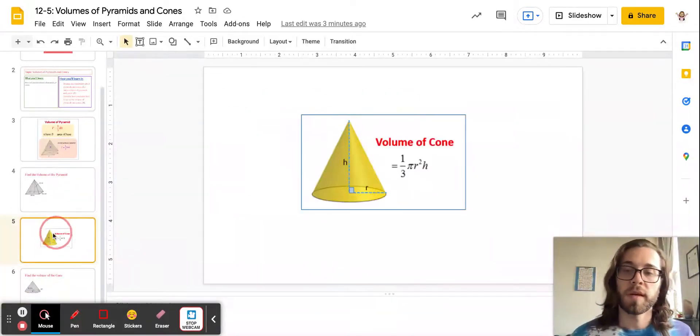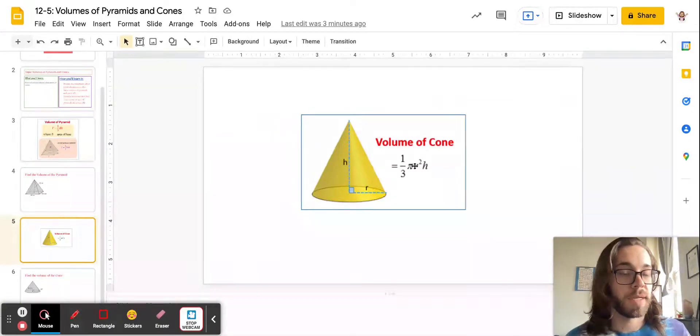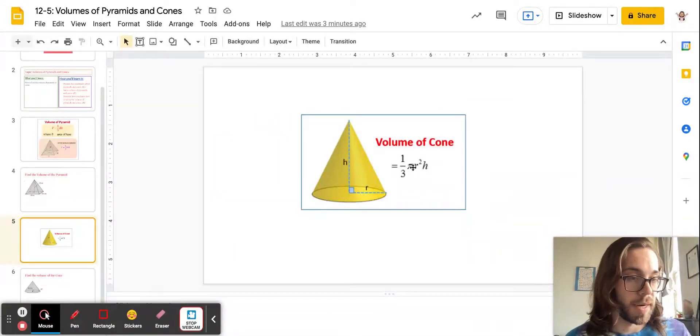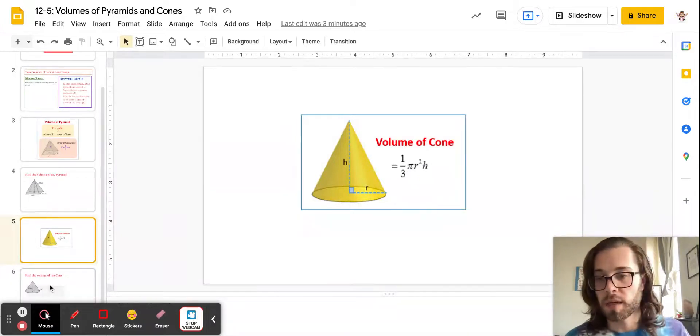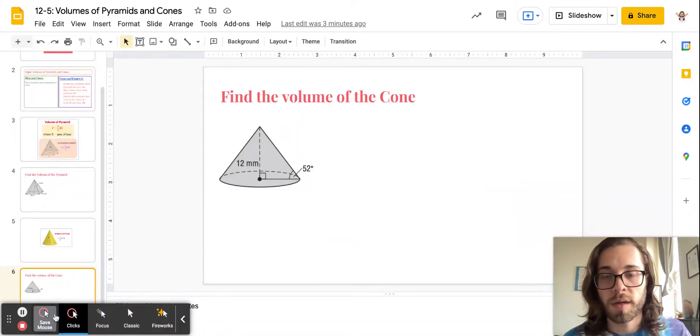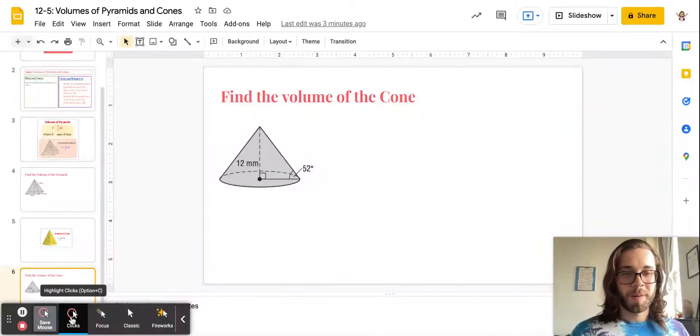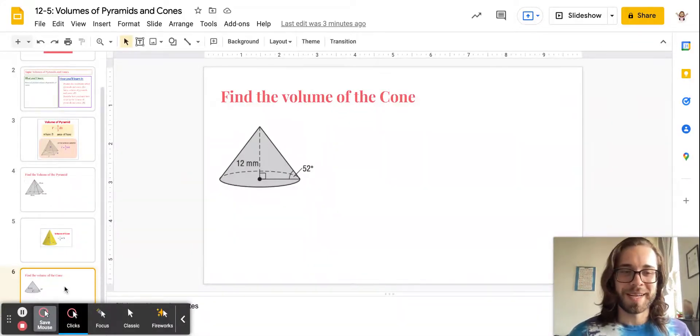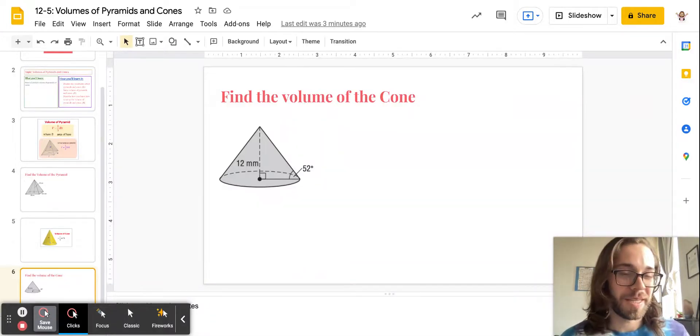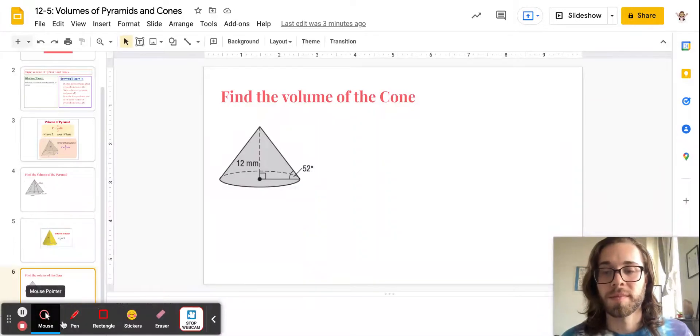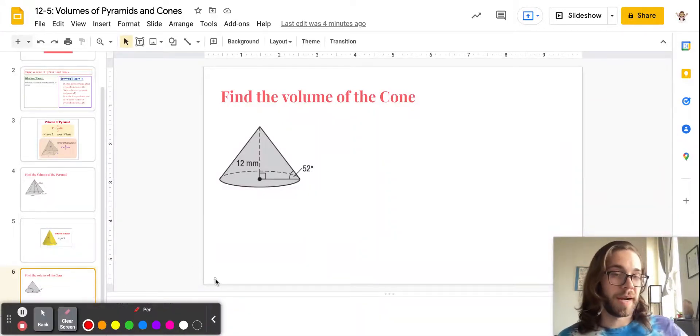Okay. So it is one-third the area of the base, which is the circle right here, pi r squared, times the height once again. So, oh, look. Angles. It's like we're going to use trig. So here's what we need to figure this out. Well, we need the radius. Once we have the radius, we have the height. That's pretty clear that this is the height. So we have that. But we do need to find the radius.